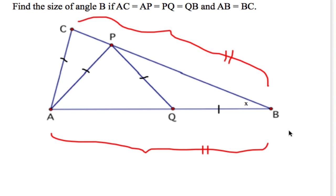Let's start with X down here, that's what we're looking for. Which means this is X because PQB is isosceles. This is 2X because it's exterior to triangle PQB. This is 2X because PAQ is isosceles.